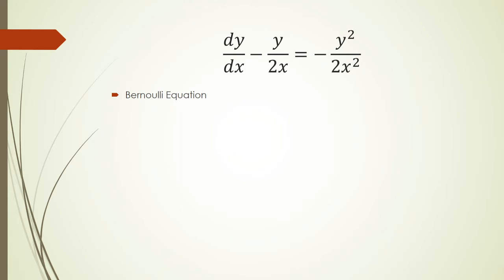This is perfect because I'm going to make the connection with Bernoulli equation. Bernoulli equation is of the form y prime plus p of x y equals q of x times y to the n. So p of x here is negative 1 half x, q of x is negative 1 over 2x squared, and n is 2.